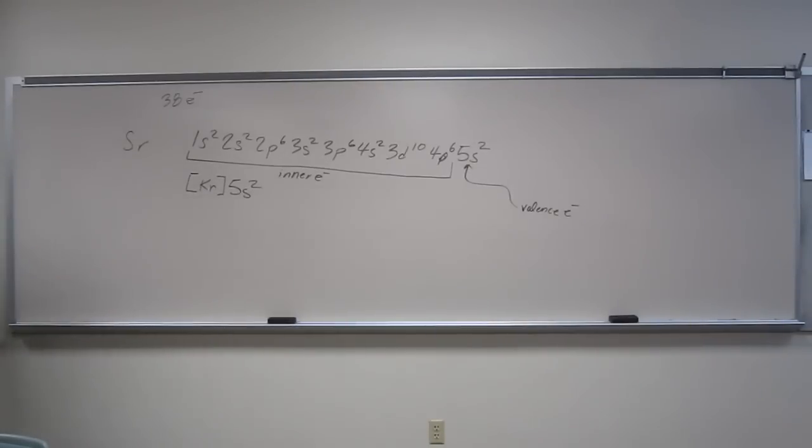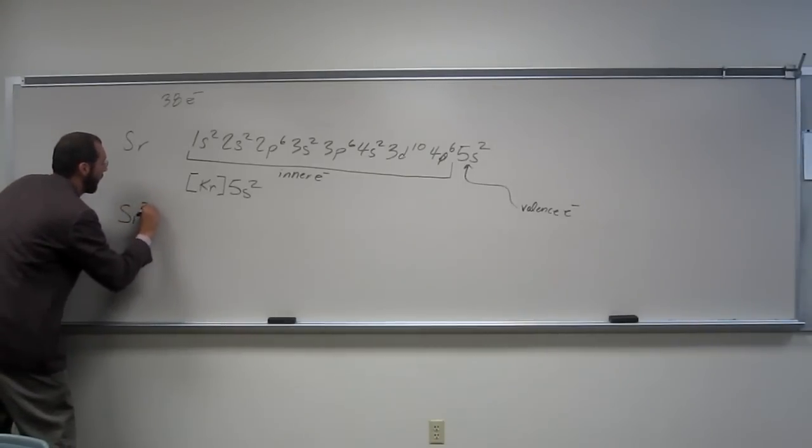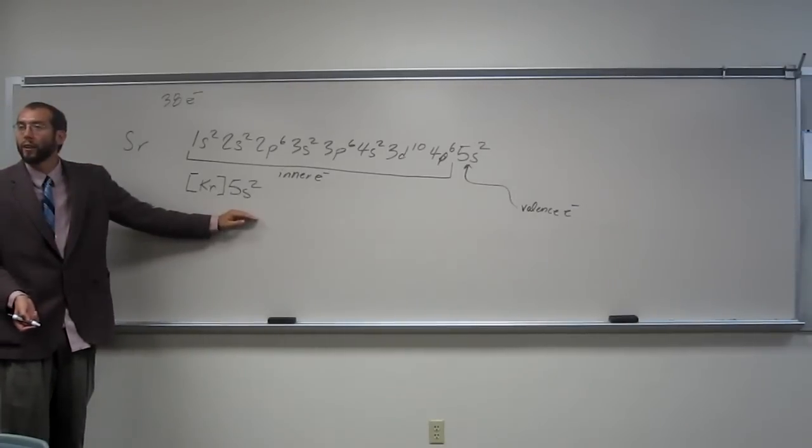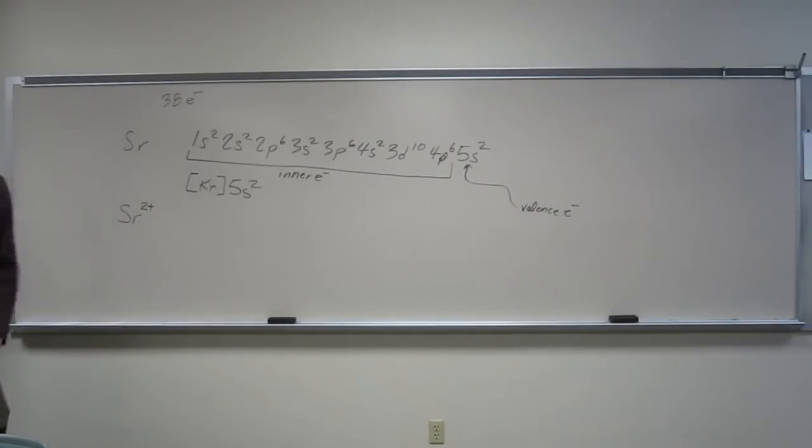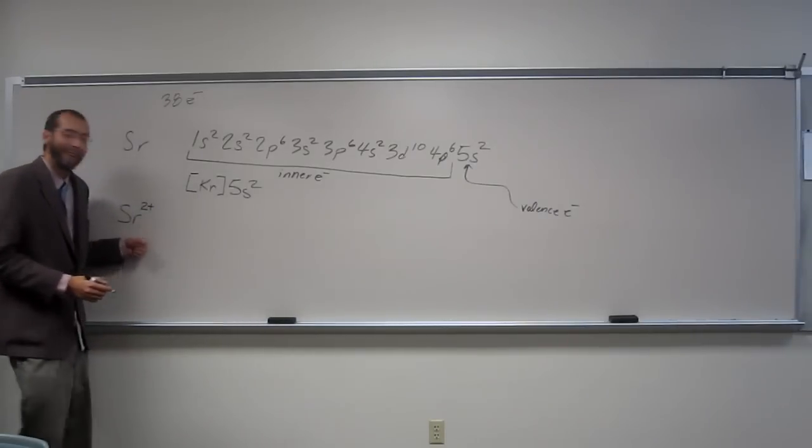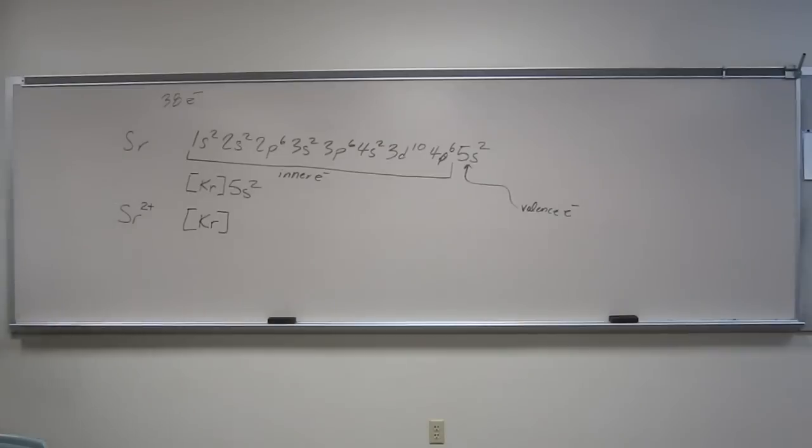Is everybody cool with that? Okay, so let's predict the ion that strontium would make. What do you think it would make? Sr2+, right? Why would you think that? Because you've got two valence electrons here. So again, this is a common ion that they've made. Let's draw the condensed electron configuration for the common ion of strontium. What would it be? Kr.